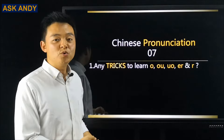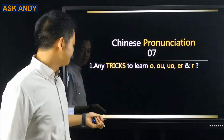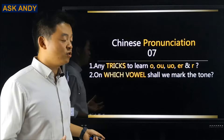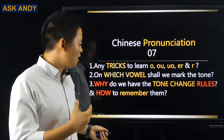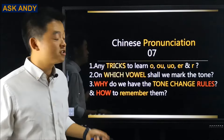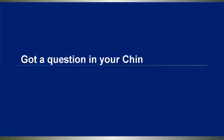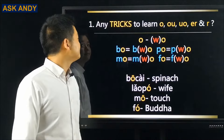I'm going to answer three questions. Question number one: any tricks to learn O, OU, UO, ER, and R? Question number two: on which vowel shall we mark the tone? For a syllable with a compound final, we have more than one vowel — I'll give you the rule. Question number three: why do we have tone change rules and how to remember them? I'll cover not only what, but also why and how. Got a question in your Chinese learning? Ask Candy. Let's get started.